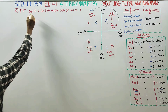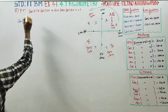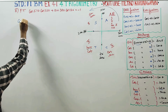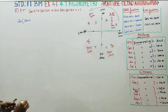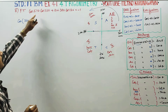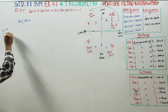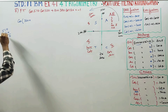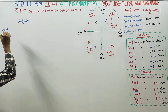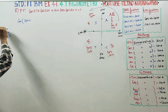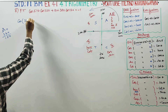First stage: cos 510. We can write this as 360 plus 150, since 510 minus 360 is 150.